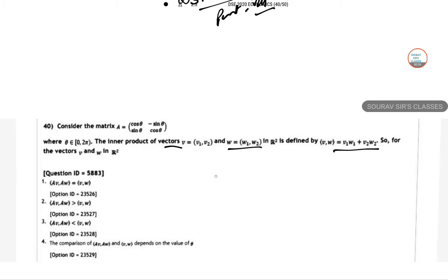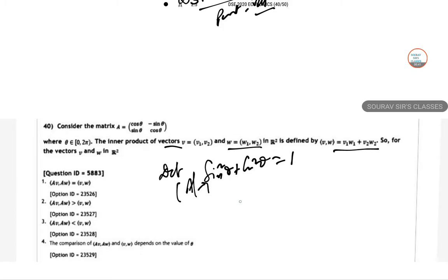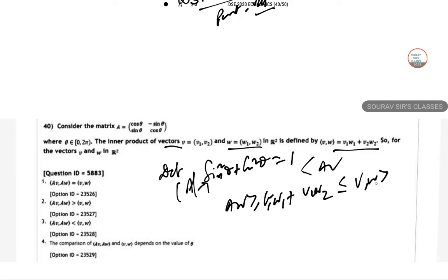Using sin²θ + cos²θ = 1, we can calculate the value. A·V is less than A·W, which is greater than or equal to V1W1 plus V2W2. So in this case the main pattern gives us option A.